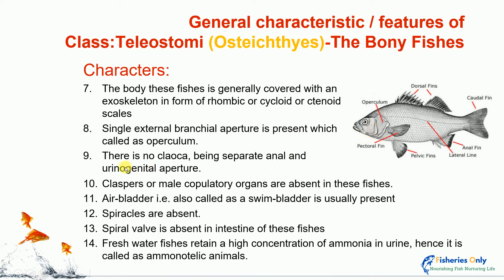Ninth character: there is no cloaca; the anal and urogenital apertures are separate. The cloaca is a chamber where the intestine and urinary ducts open, but there is no cloaca in this species. Tenth character: claspers, or male copulatory organs, are absent in this species. Claspers are the male copulatory organs that transfer sperm into the female body — a secondary sexual character — and their absence means fertilization is mostly external, with eggs and sperm fertilizing outside the body of the female in the environment.